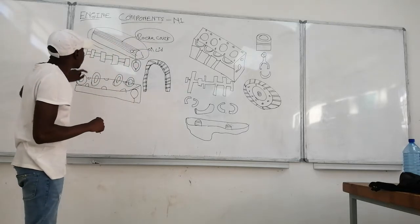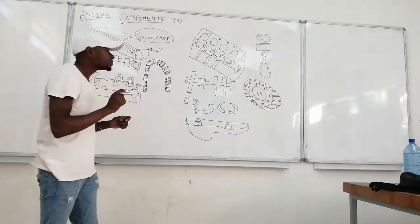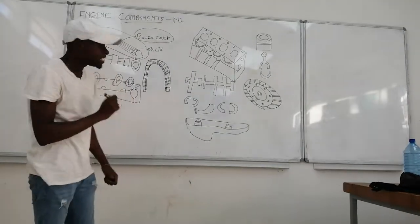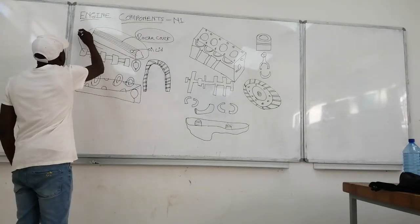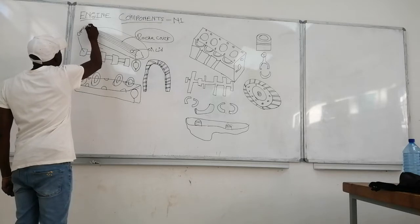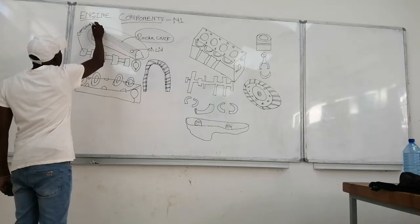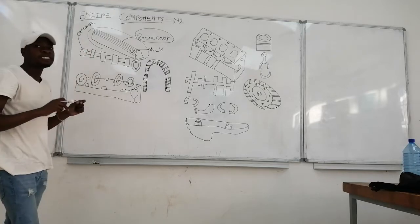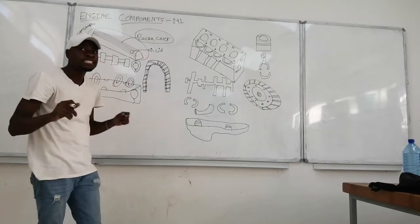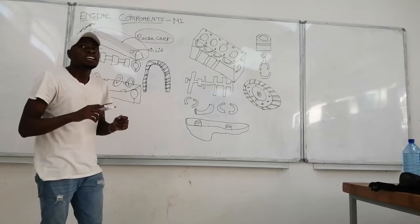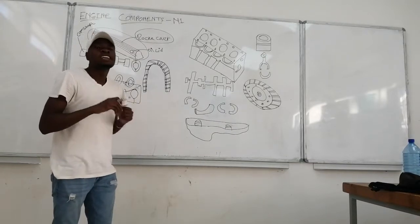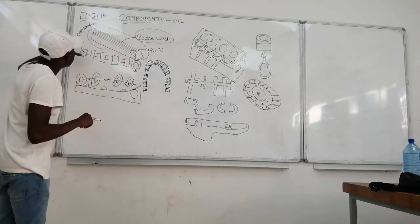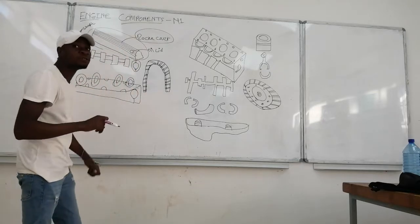Our second component of the engine is called the camshaft. The camshaft is the brain of an engine — it controls everything inside an engine. It controls the valves, the pumps, everything. It's all controlled by the camshaft. That's why I call it the brain of an engine.